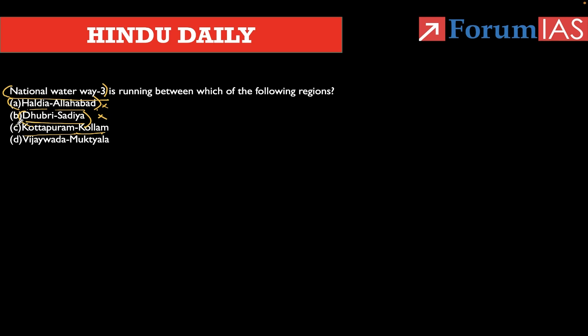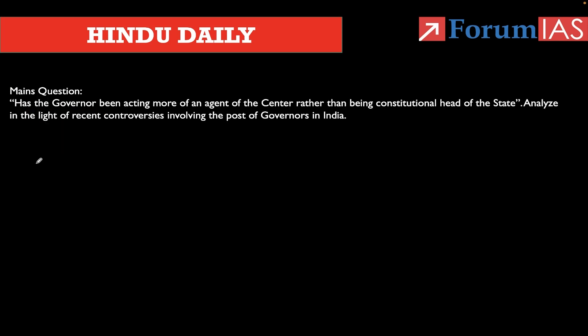For question 2: National Waterway 3 runs between Kottapuram and Kollam through the Champakara canals — option C is correct. Haldia-Allahabad is NW1, Dhubri-Sadiya is NW2, Vijayawada-Muktyala is NW4. The mains question: has the Governor been acting more as an agent of the Centre rather than as the constitutional head of the state? Analyze in light of recent controversies involving the post of governors in India. Practice it — see you in another news analysis tomorrow!